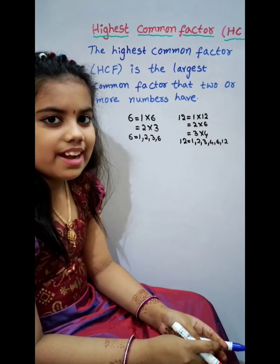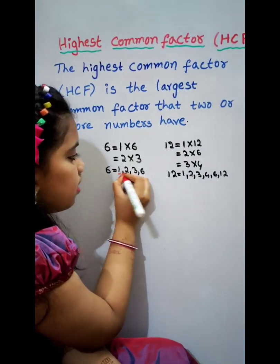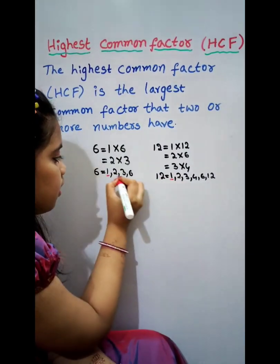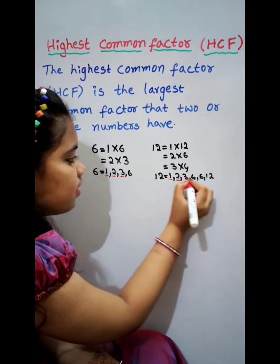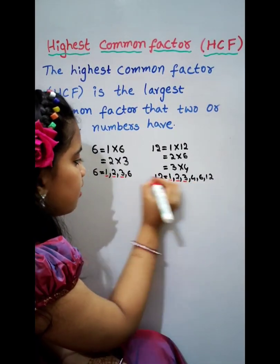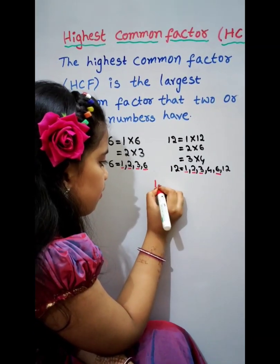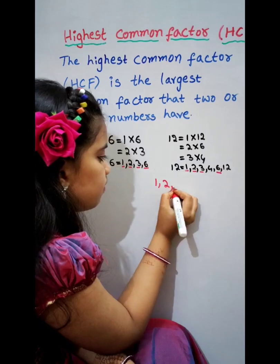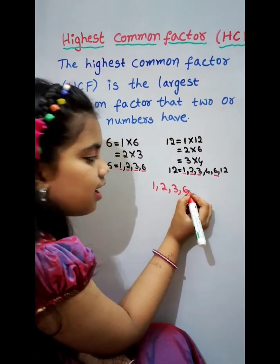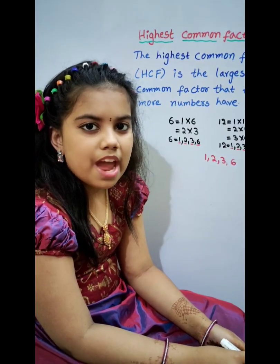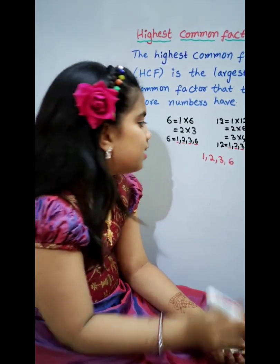First we find the Common Factors: 1, 1, 2, 2, 3, 3, 6, 6. Common Factors are 1, 2, 3, 6. The Highest Common Factor of 6 and 12 is 6.